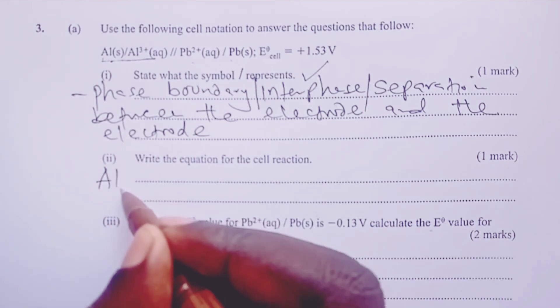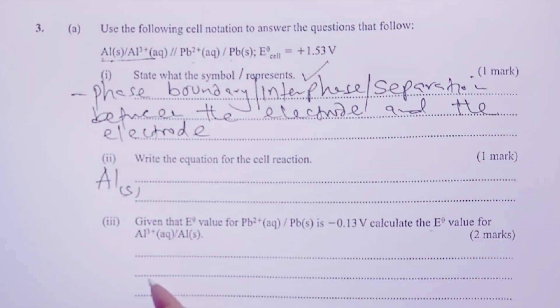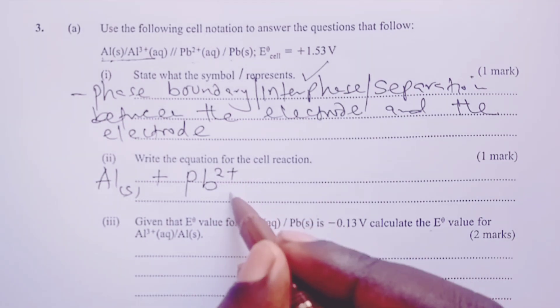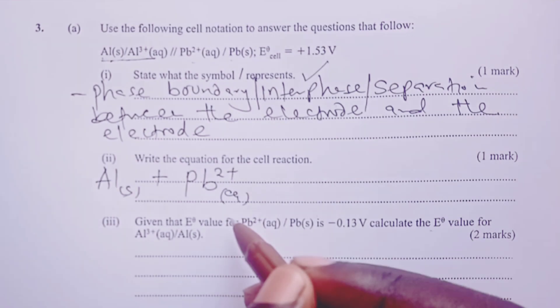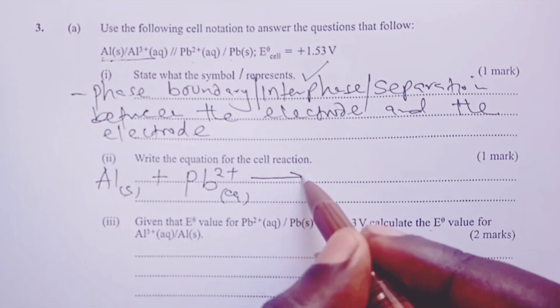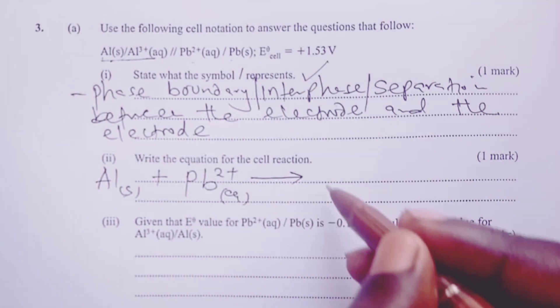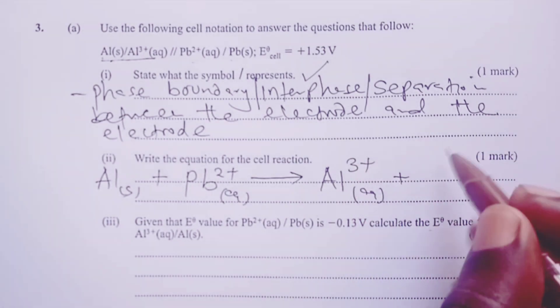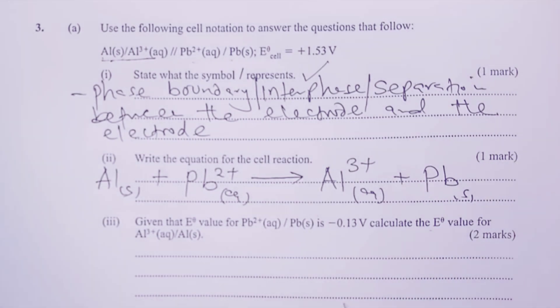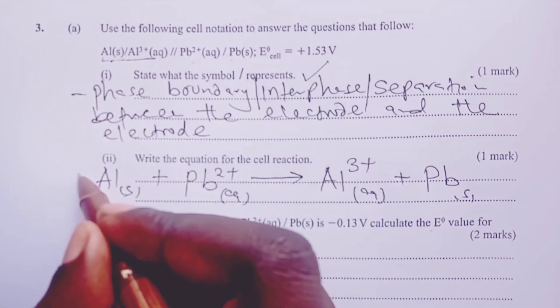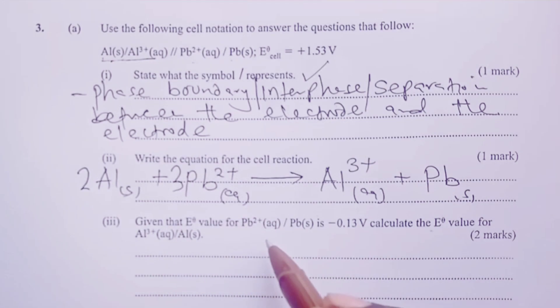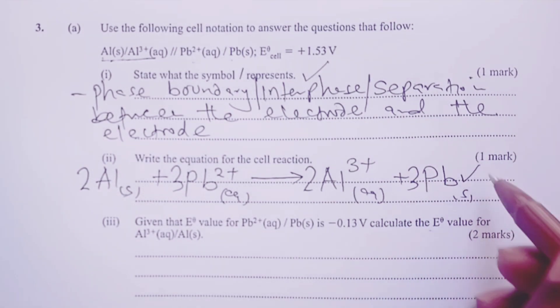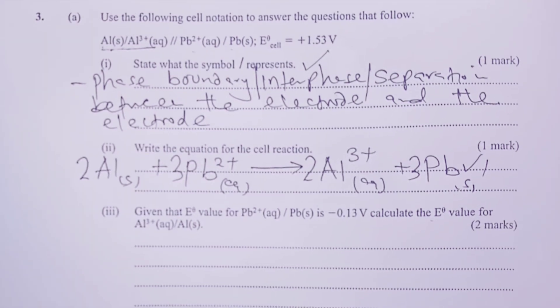So as we write the equation, we shall begin with aluminum in solid state, which will then be oxidized to aluminum ions, reacting with lead ions, which shall be in aqueous state, but these ones will be reduced to lead metal in the reaction. So once this reaction has taken place, aluminum will be oxidized to its ions, and lead will be reduced from the ions to the element. So then, we go ahead and balance the charges with a 2 on aluminum, a 3 on lead ions, a 2 on aluminum ions, and a 3 on lead atoms for the next mark.